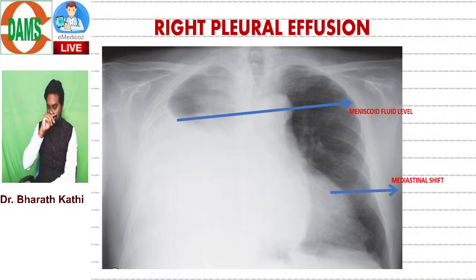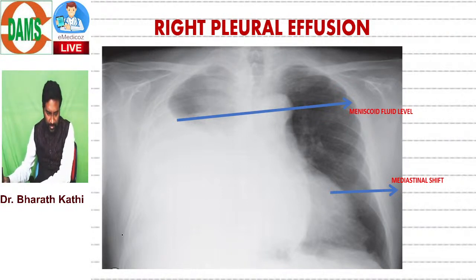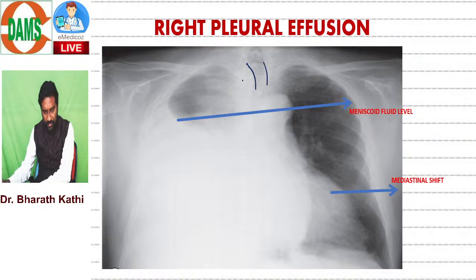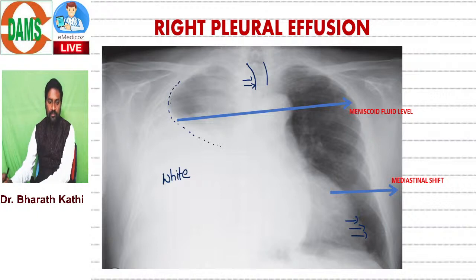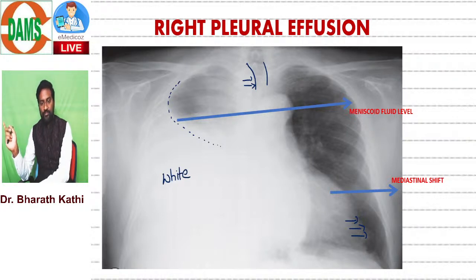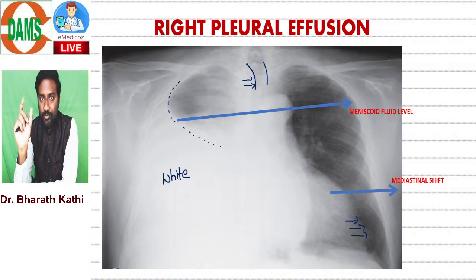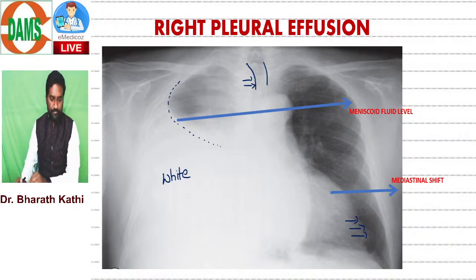This is a chest X-ray of a patient with pleural effusion. If you notice, the trachea appears shifted to the left, the heart shadow is also more towards the left, and there is a whitish density with a meniscoid fluid level. This is a whitish abnormality with a meniscoid level and push of the mediastinum to the opposite side - this entity is called pleural effusion.